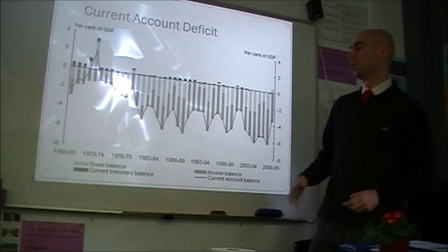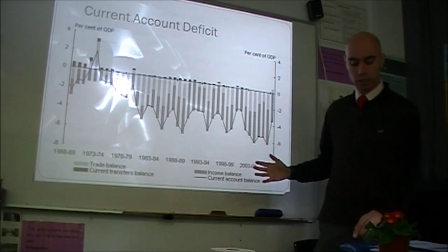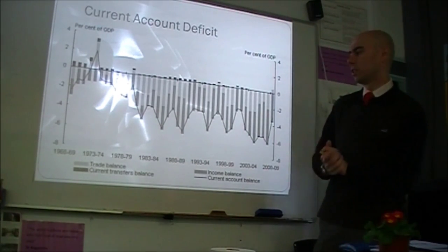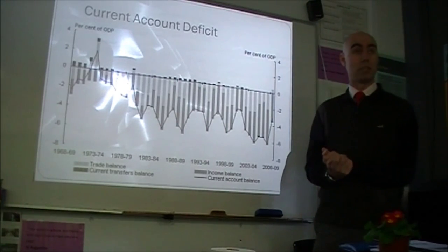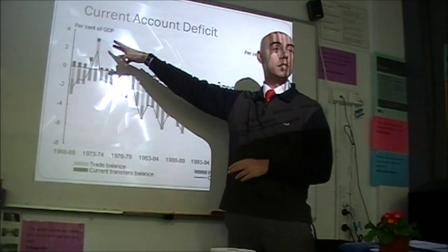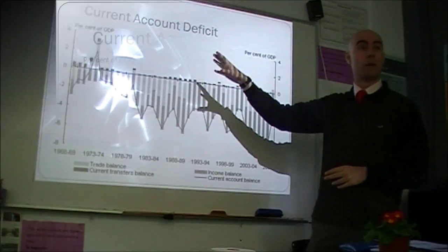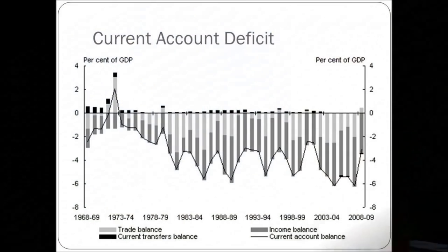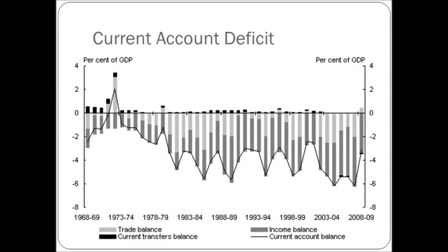Let's look at the current account deficit historically. In the mid-70s, Australia actually had a current account surplus — up around 3-4% of GDP. That was one of the reasons why the government was willing to cut tariffs so much; they weren't as concerned about external stability. Australia was actually exporting so much that we had more money coming in.